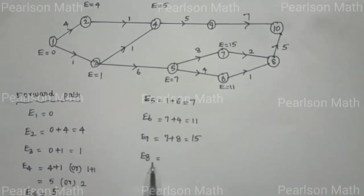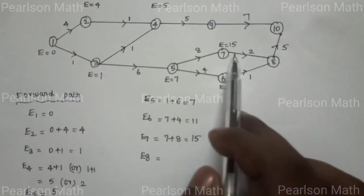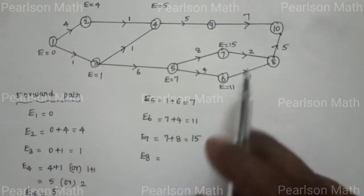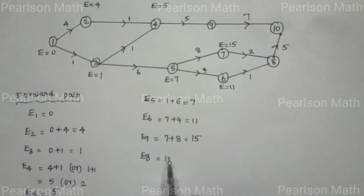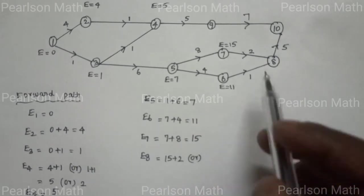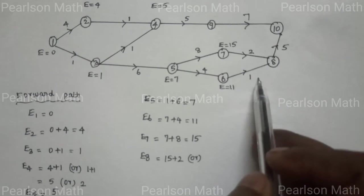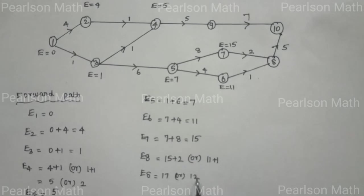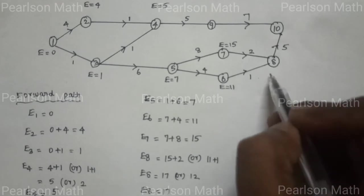Now E8 is here. Path 7 to 8 gives 15 plus 2 equal to 17. Path 6 to 8 gives 11 plus 1 equal to 12. The maximum value is 17, so E8 is equal to 17.